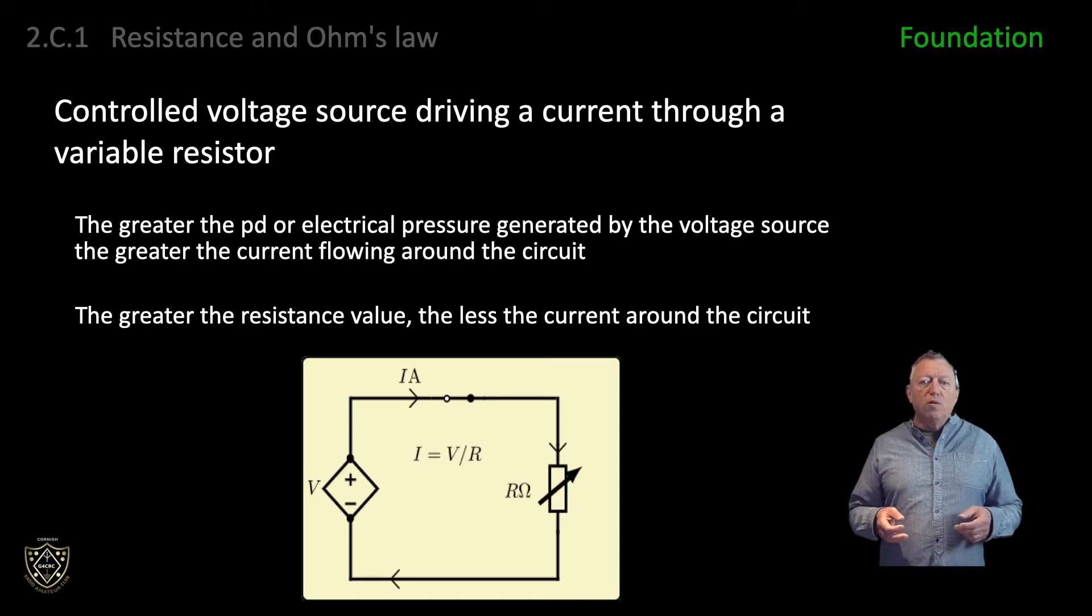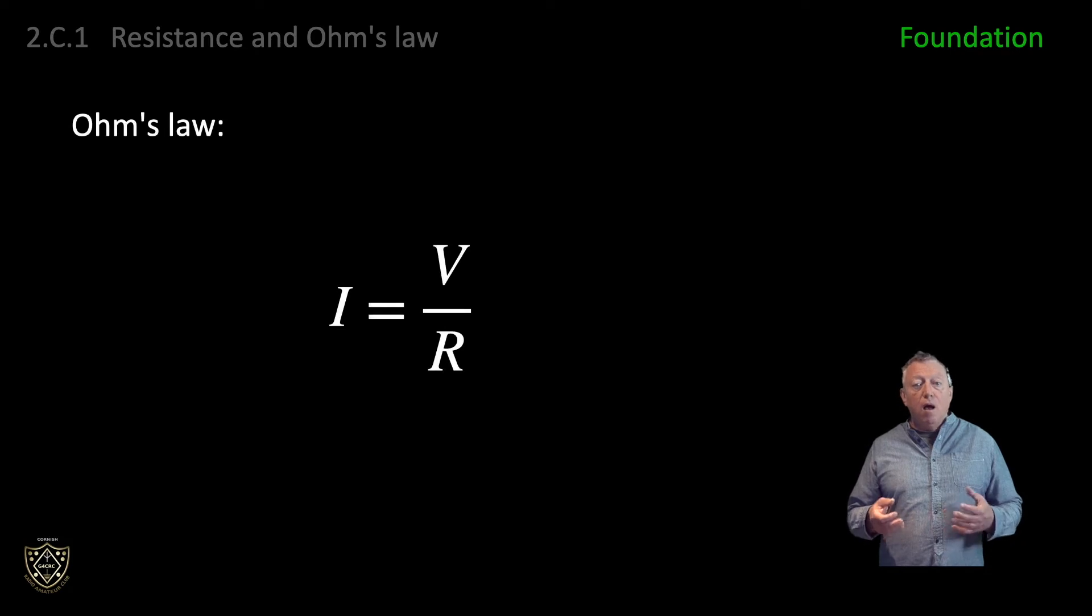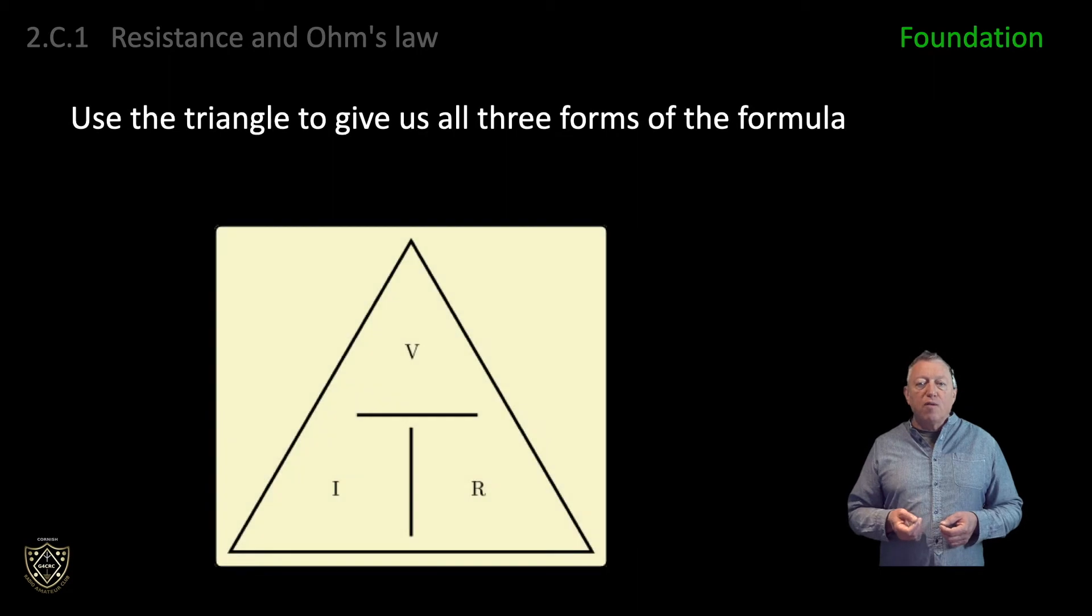The relationship between voltage, current, and resistance is given by Ohm's law. I equals V over R, where I is the current in amps A, V is the voltage in volts V, and R is the resistance in Ohms. Just as with the power formula, we need to be able to change the subject of the formula to put either I, V, or R on the left-hand side of the equal sign. Again, we can use the triangle to give us all three forms of the formula. I equals V over R, V equals I times R, and R equals V divided by I.